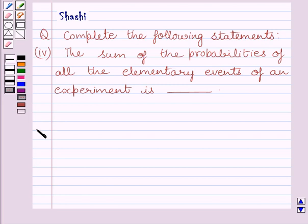Let us now start with the solution. Now first of all, let us understand what is an elementary event. An event having only one outcome of the experiment is called an elementary event. Now let us take one example to understand what is an elementary event.